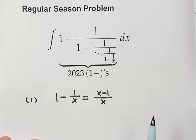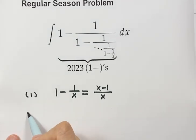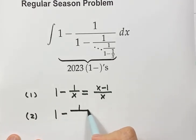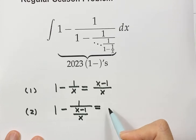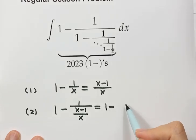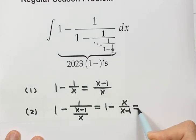And here we have step two. That's 1 minus 1 over, put this one down here, x minus 1 over x. Then just 1 minus x over x minus 1. Then simplify, we have negative 1 over x minus 1.